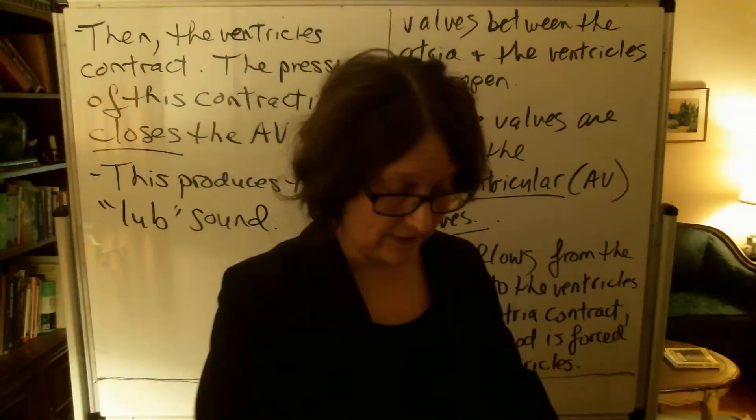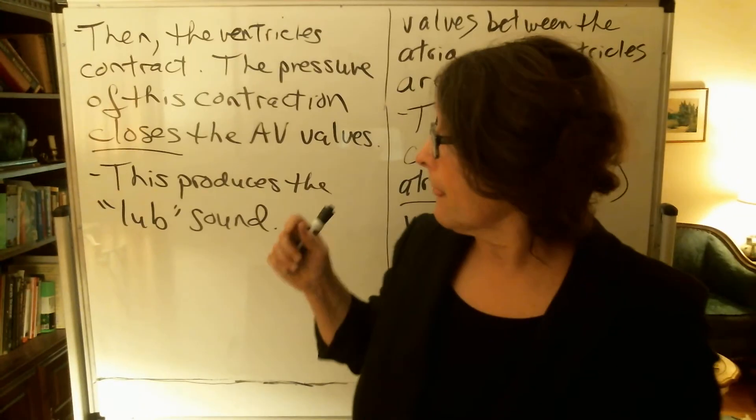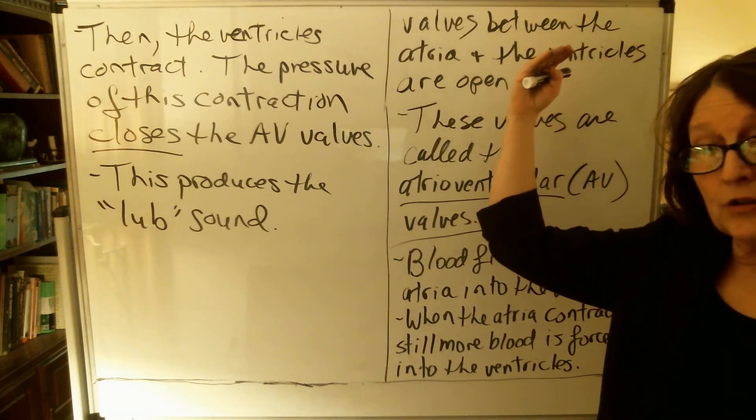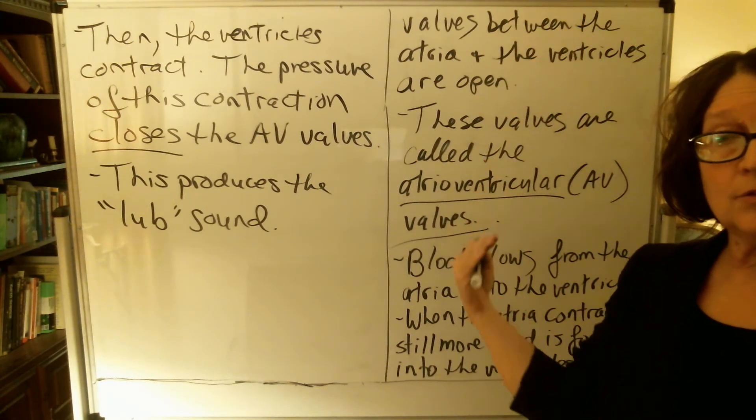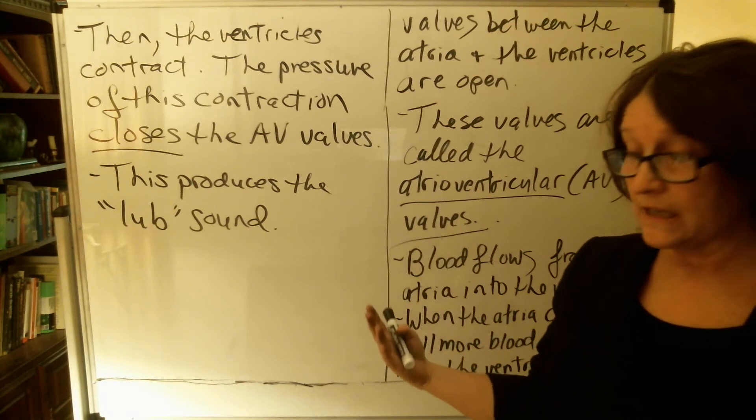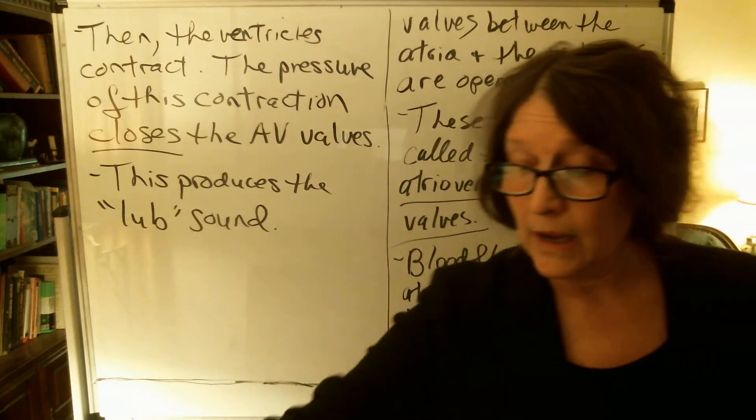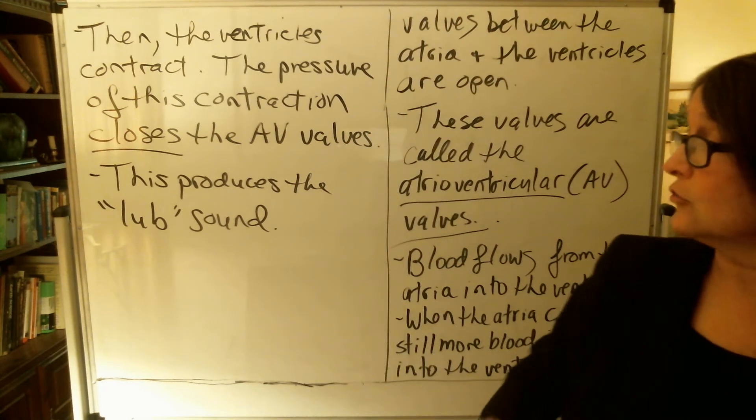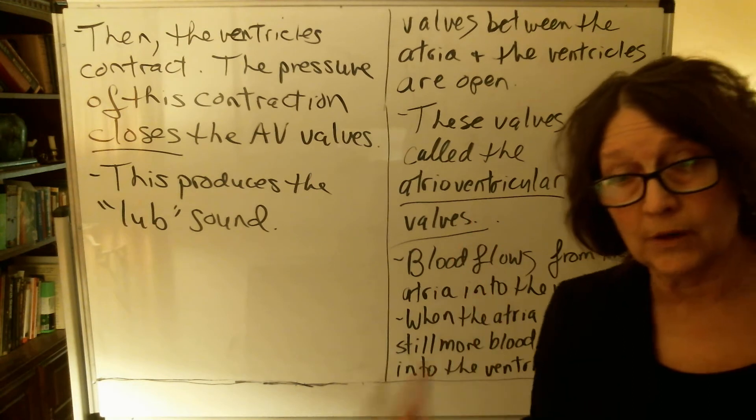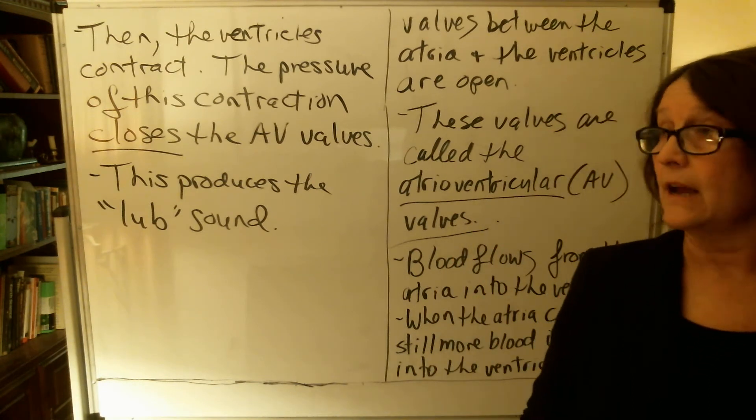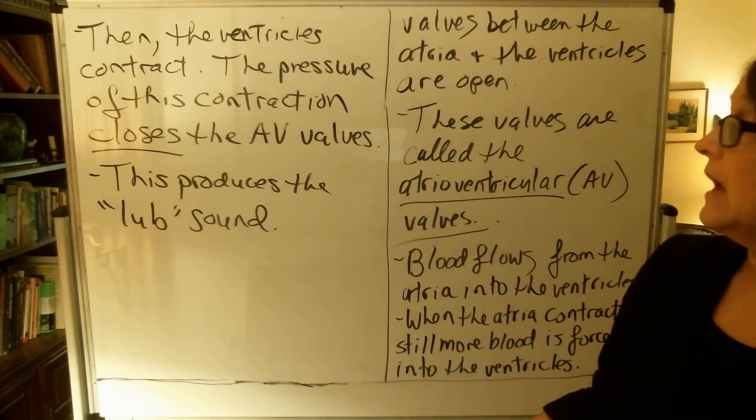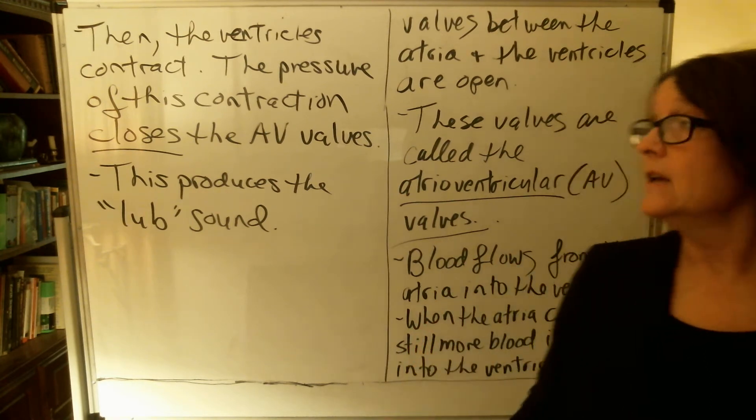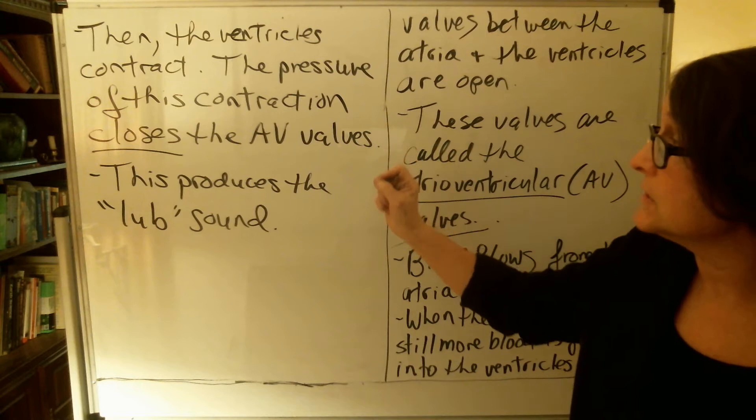So what did I just say? You have blood flowing into the atria and then down into the ventricles freely. Everything is fine, but then the atria contract, forcing blood from the atria down into the ventricles. But you do not want blood flowing back into the atria.